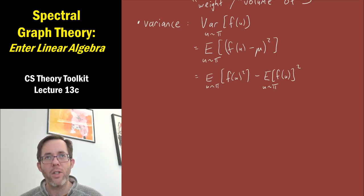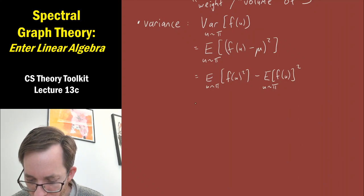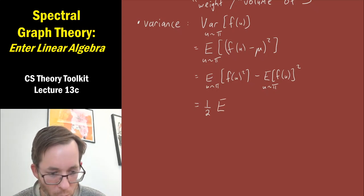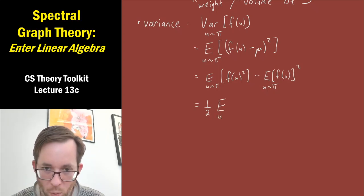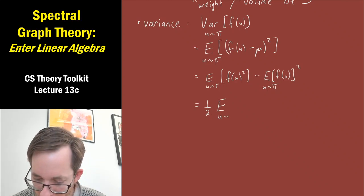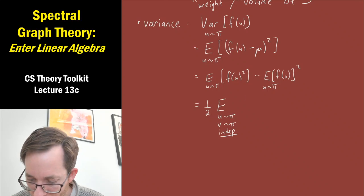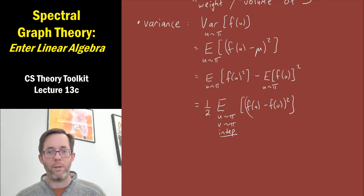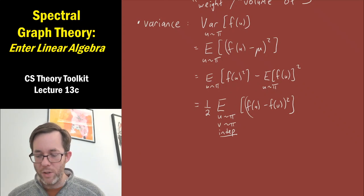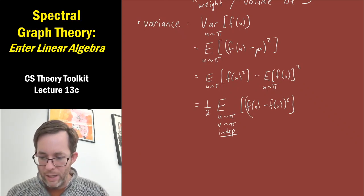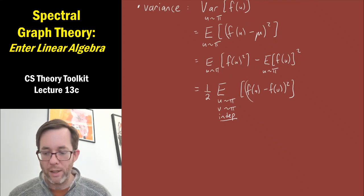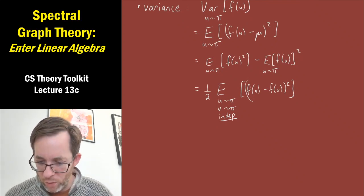There's one more totally standard formula for the variance of a random variable. It's actually half of the expected squared difference between two independent copies of the random variable. Specifically, this variance is also equal to one-half times the expectation — when u and v are each drawn independently from pi — of f of u minus f of v, squared.